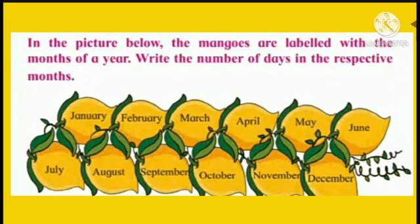Students, how many months are there in a year? Yes, very good — 12 months. In the picture below, the mangoes are labelled with the months of a year. Write the number of days in the respective months.